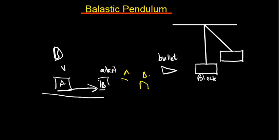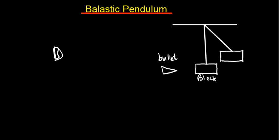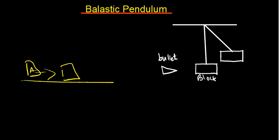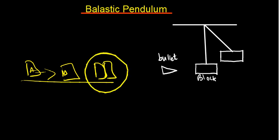Inelastic collision is a type of collision whereby, after collision, the two objects are going to be moving with the same velocity — they are going to stick together. If A bumps into B and B was initially at rest, they will stick together after collision. That is inelastic collision.